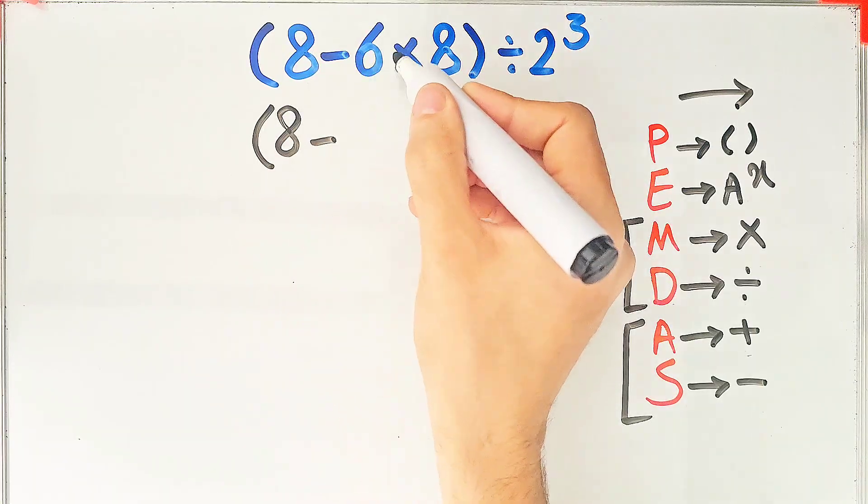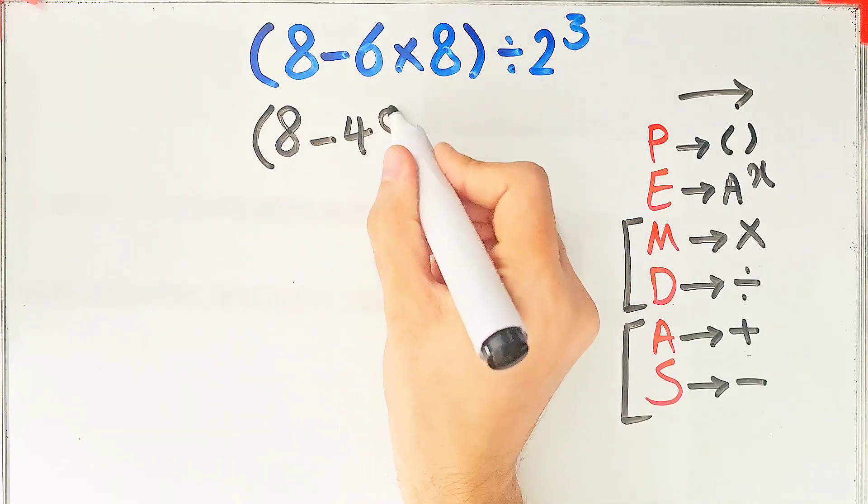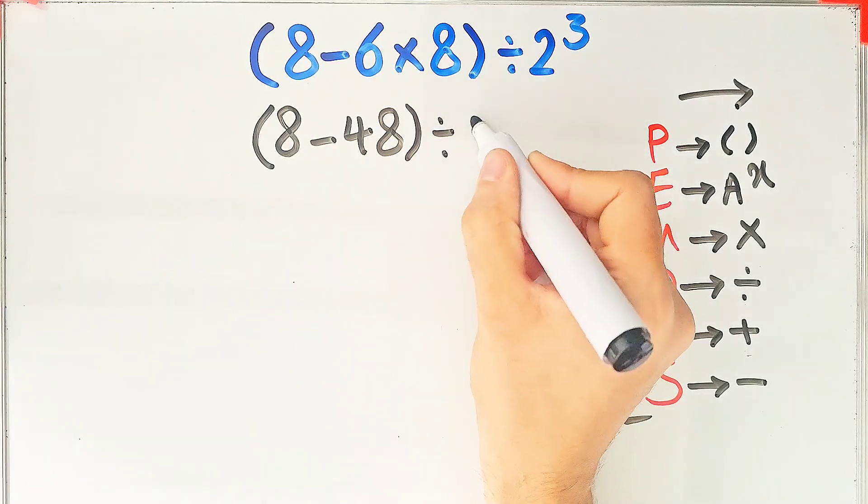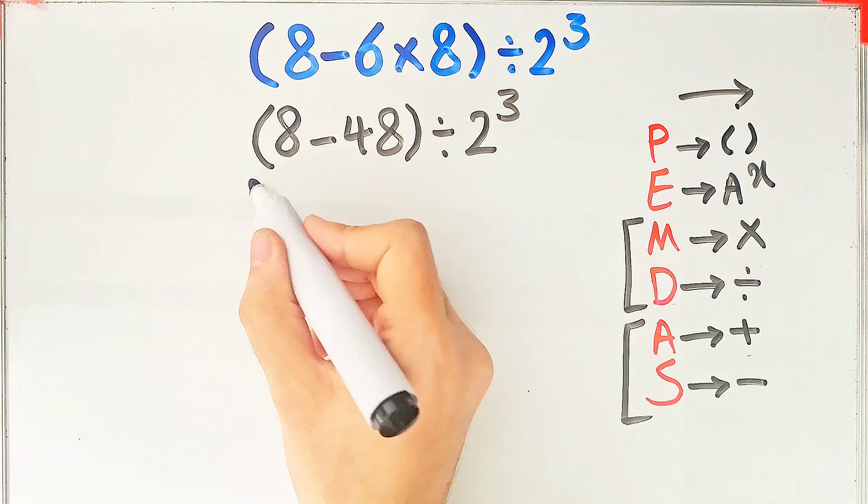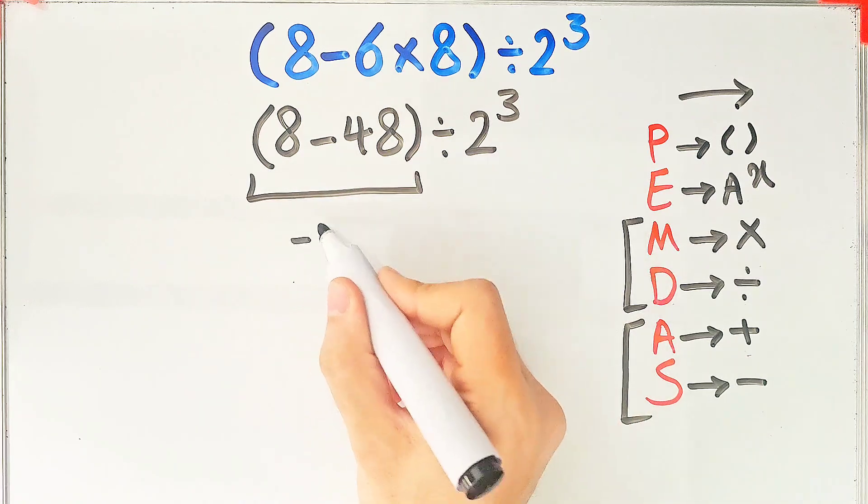Negative 6 times 8 equals negative 48. Now we have 8 minus 48 divided by 2 to the power of 3. 8 minus 48 equals negative 40.